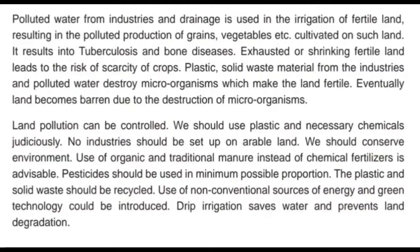Land pollution can be controlled. We should use plastic and chemicals judiciously. No industries should be set up on arable land. We should conserve the environment. Use of organic and traditional manure instead of chemical fertilizers is advisable. Pesticides should be used in the minimum possible proportion. Plastic and solid waste should be recycled. Use of conventional sources of energy and green technology should be introduced. Drip irrigation saves water and prevents land degradation.